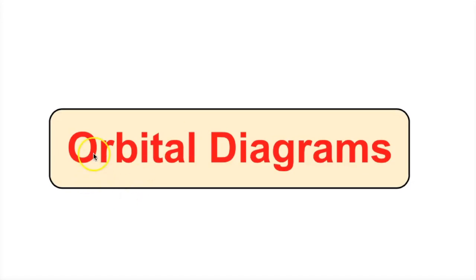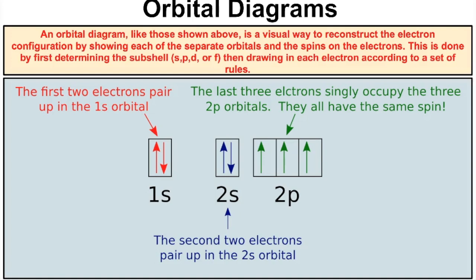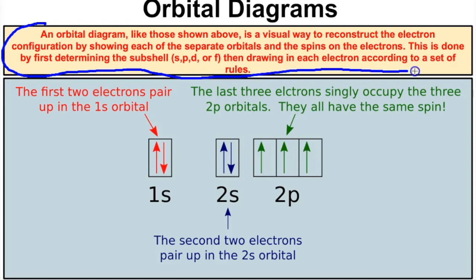Hey you guys, this is Mr. Millings and today we're going to learn about orbital diagrams. If you remember from an earlier video, we learned how to write the electron configurations for different atoms, and we said that the electron configurations represented the highest probability for where those electrons can be located around the nucleus. Today we're going to build on that. An orbital diagram is a visual way to reconstruct the electron configuration by showing each of the separate orbitals and the spins on those electrons.